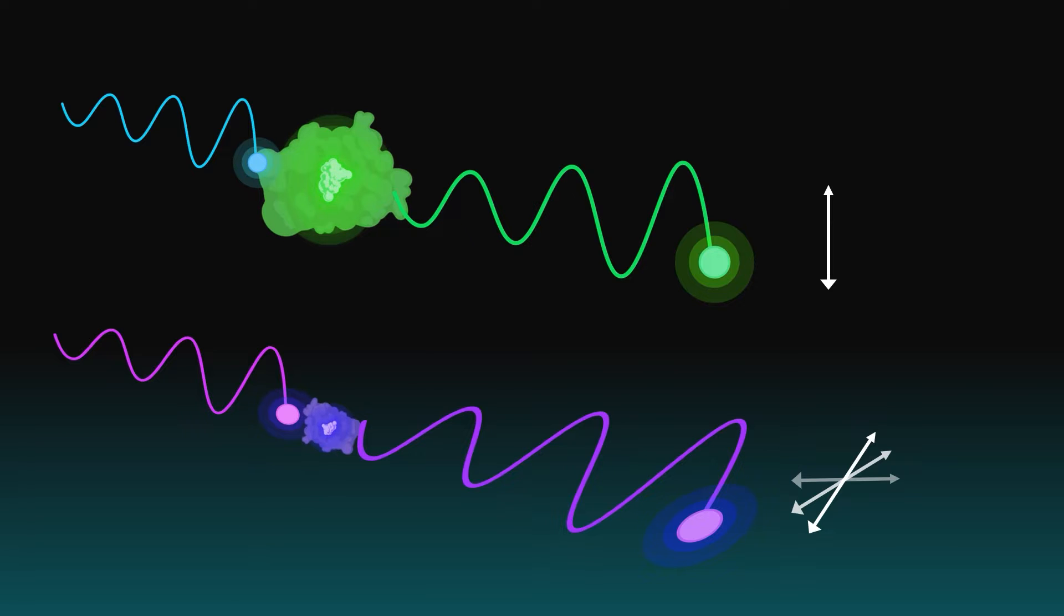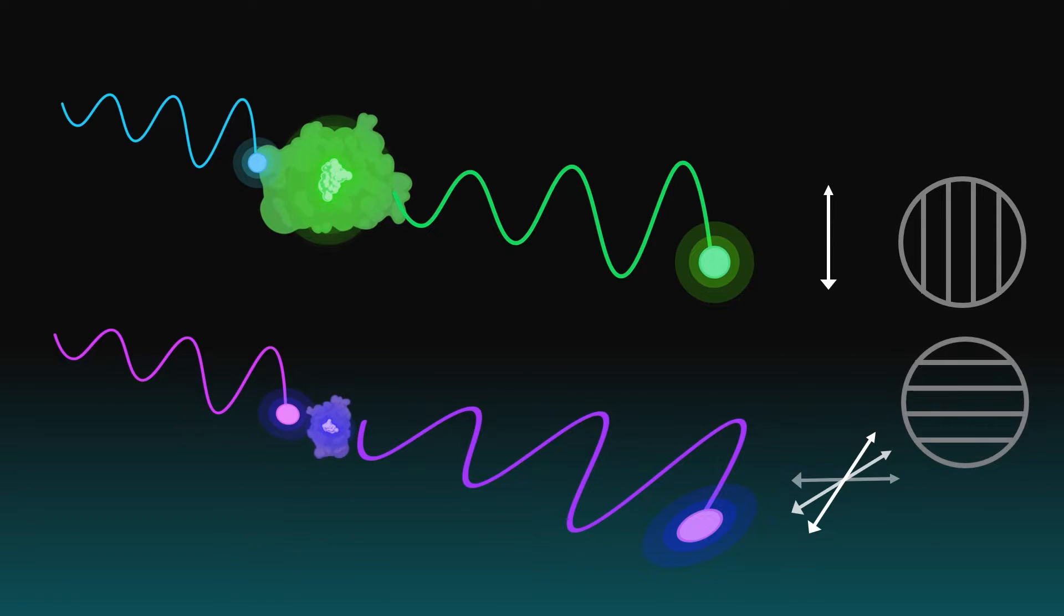Then, by measuring emission intensity that is parallel and perpendicular to the excitation plane, we can calculate the relative fluorescence polarization of a molecule in solution.